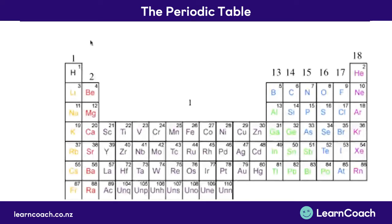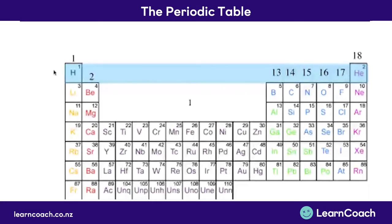The periodic table is split up into horizontal rows and vertical groups. The horizontal row shows which electron shell is being filled. This first horizontal row shows the atoms that are having the first electron shell filled.